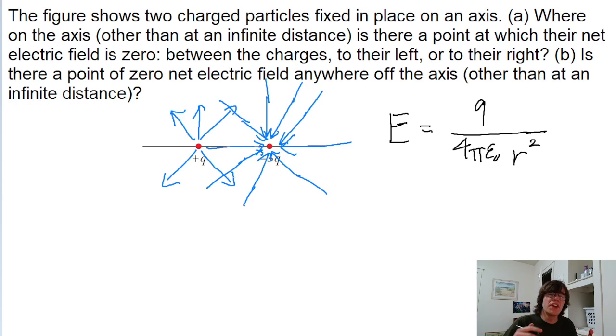We need to find a point where the arrows are pointing in opposite directions so that some canceling out is going on. There definitely will not be any canceling out in between the particles because the electric field lines are pointing away from the positive charge and into the negative one. So they're just pointing directly to the right and nothing's going to cancel out there.